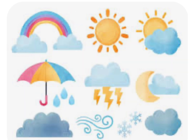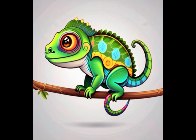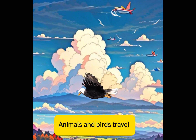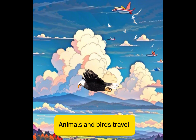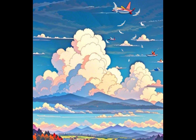Some animals change color, camouflage, and respond to changes in temperature and season. Some animals will travel from one place to another, migrate, in search of better temperature, habitat, and food.